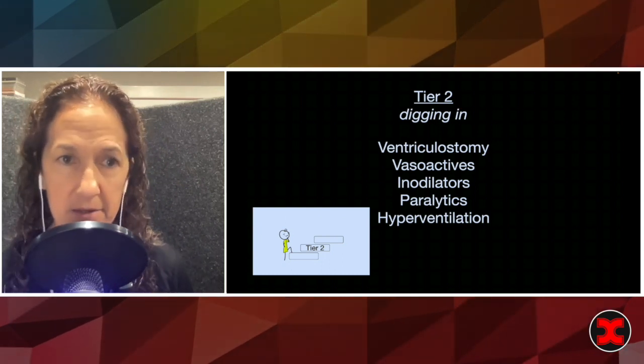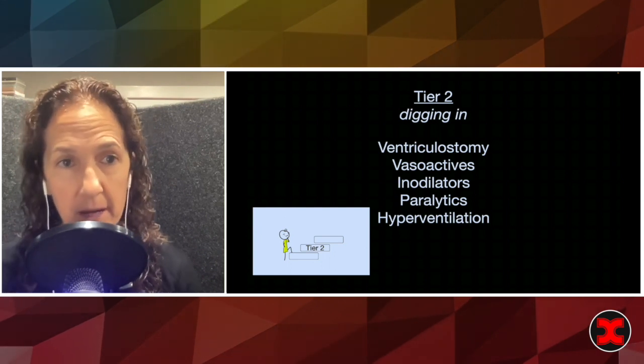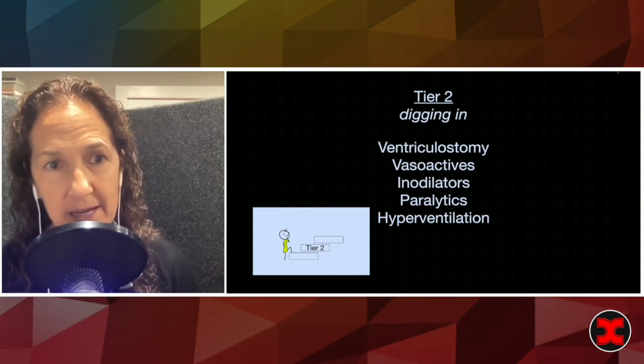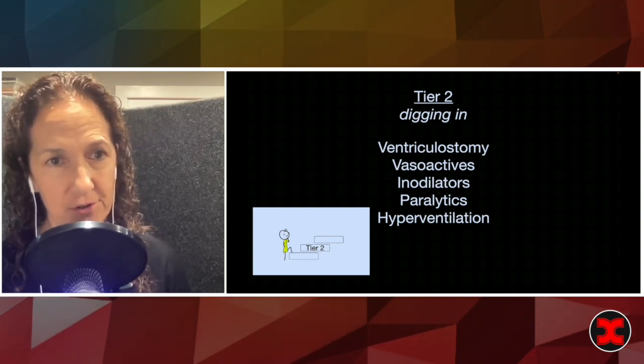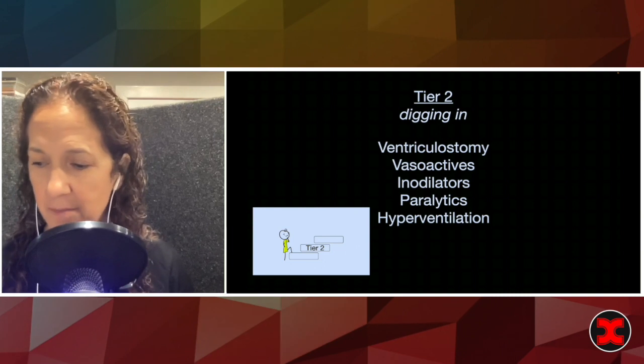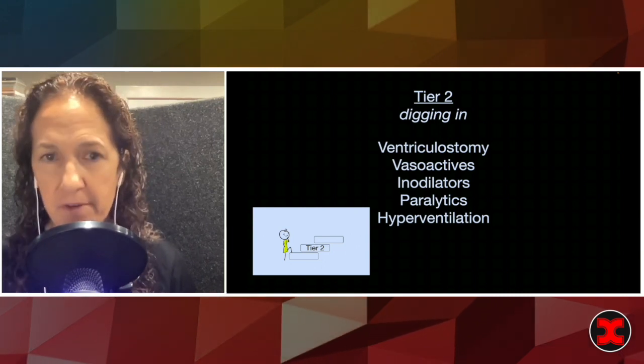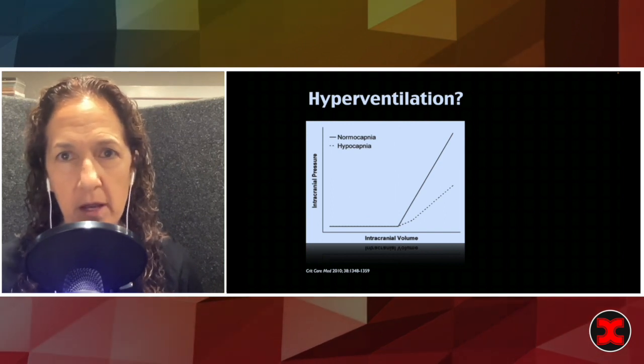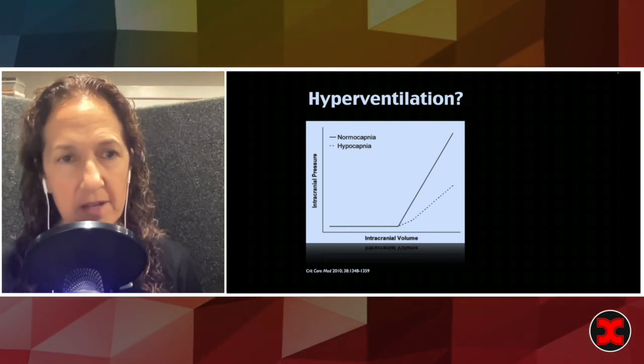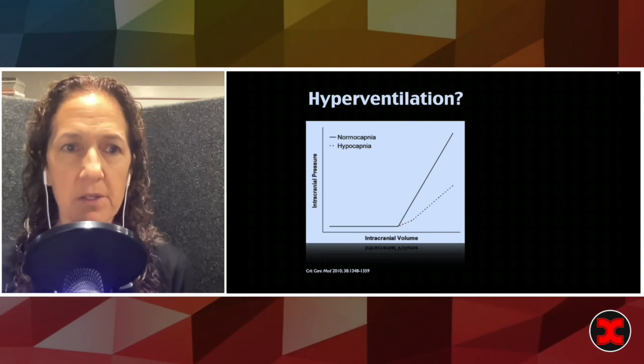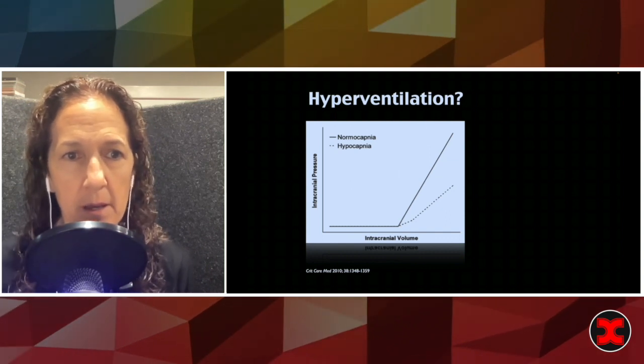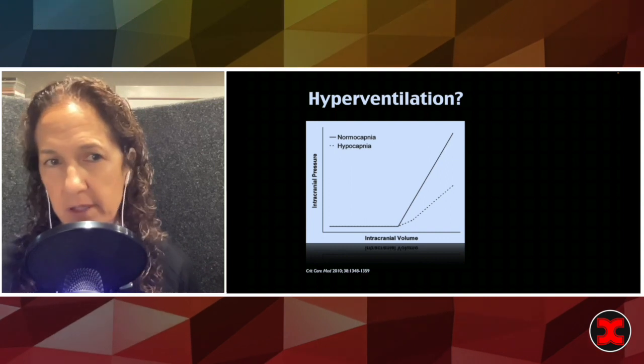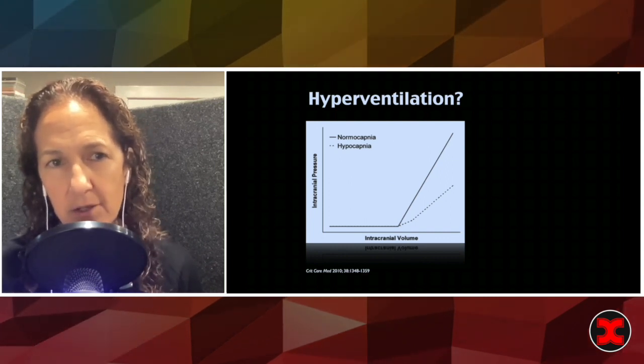Now hyperventilation - we're getting toward the end of tier two - and hyperventilation has some caveats. Yeah, hyperventilation is very effective. It will blow off CO2 and it'll cause vasoconstriction and buy you some real estate in that skull. But you only want to do it if you have a pop-off valve. If you've got that ventriculostomy that you can drain CSF with, that's good. Or if you're going to the OR for a craniectomy, now's the time to hyperventilate.